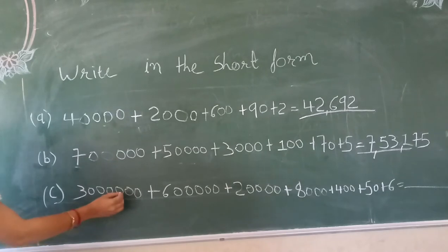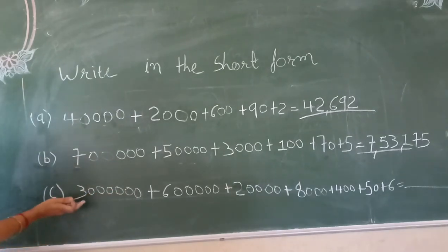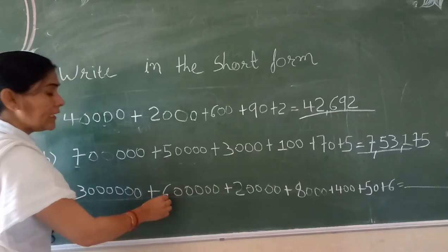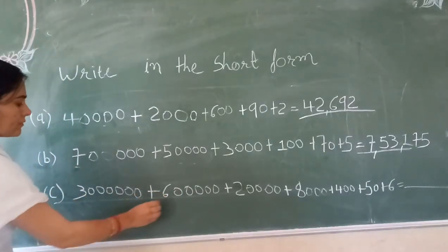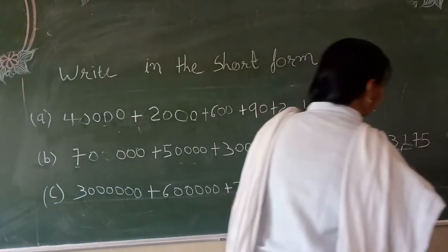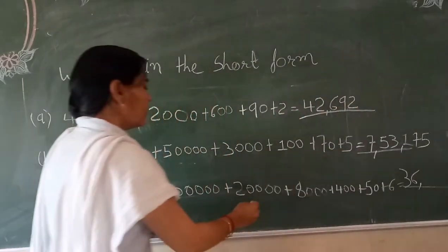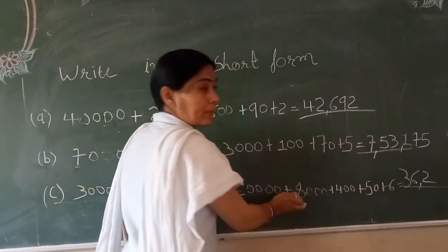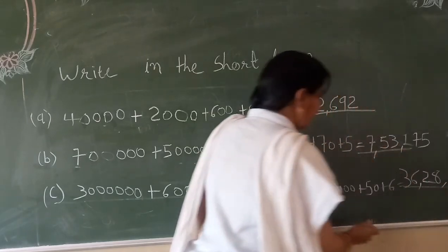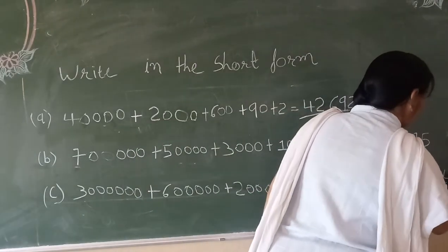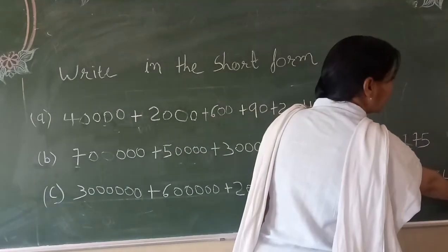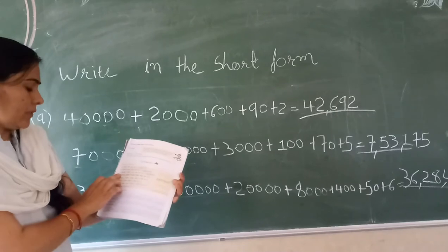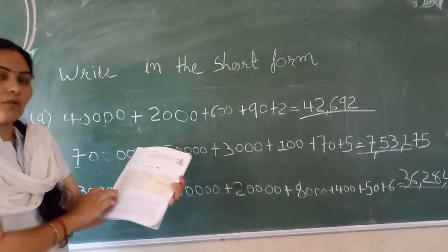Next one: one place, ten, hundred, thousand, ten thousand, and lakh. In the lakh place there is 6, so 36 lakh. Next one: ten thousand place there is 2, thousand place there is 8, so 28,000. Hundred place there is 4, ten place there is 5, one place there is 6. So 36 lakh, 28,456. We do exercises A to C here and A to H you do yourself at home.